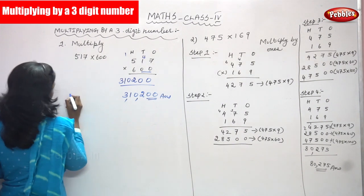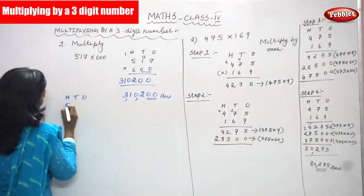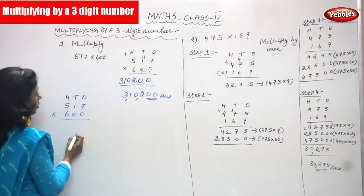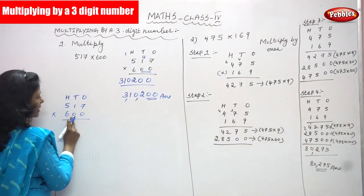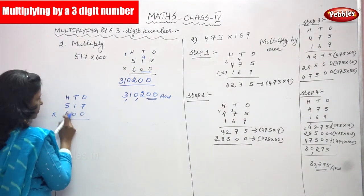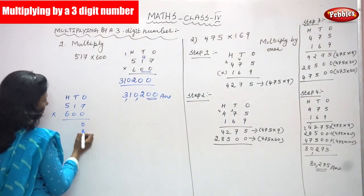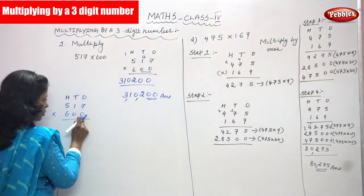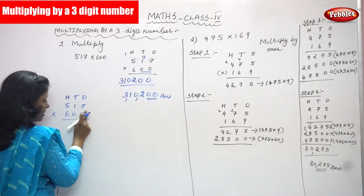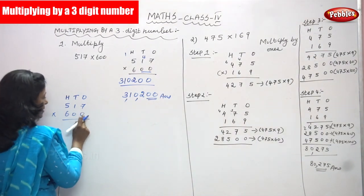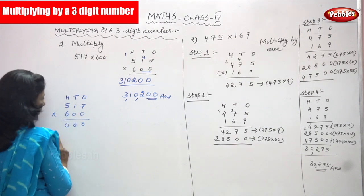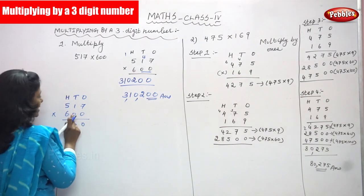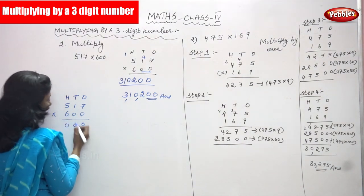Otherwise, the normal method: that is 517 into 600. What you are going to do — first multiply by 0 in the 1's place, then multiply by the 10's place value. The 1's place is 0 and the 10's place is also 0. So 0 into 7 is 0, 0 into 1 is 0, 0 into 5 is 0. Then for the 10's place, you put 0 in the 1's position and multiply: 0 into 7 is 0, 0 into 1 is 0, 0 into 5 is 0.